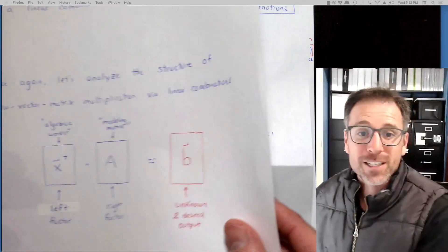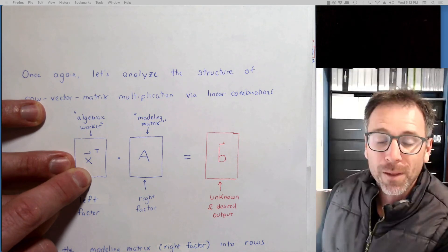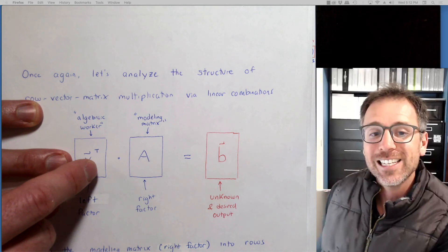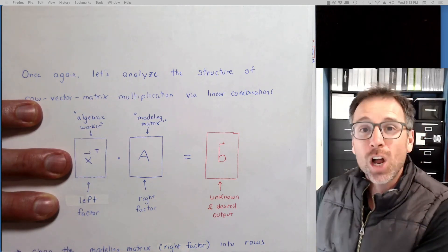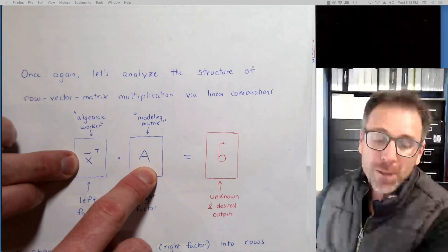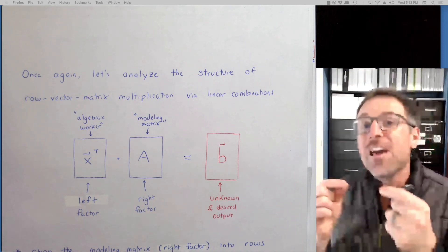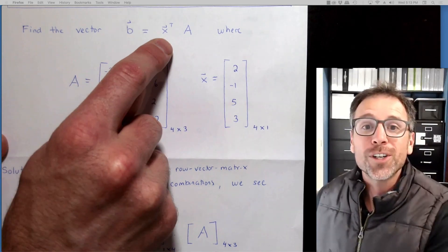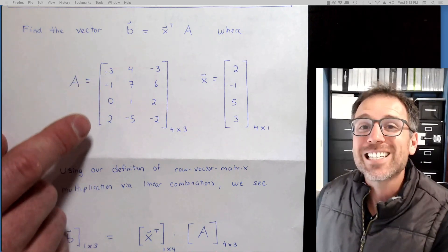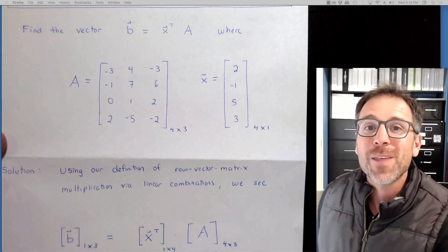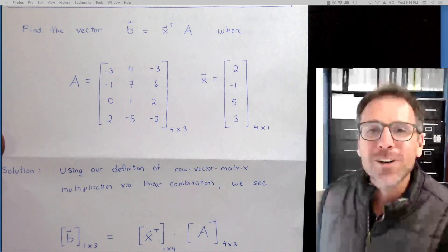To recap: when multiplying a row vector x-transpose by matrix A, the modeling matrix is on the right and we partition it into rows, taking linear combinations of those rows with scalars from the left vector. In matrix-column vector multiplication, the modeling matrix is on the left and we take linear combinations of the columns. There's a clear duality — linear combinations via columns versus via rows. Community challenge: can you find an alternate definition of x-transpose times A using dot products, and confirm it gives the same result? That's exactly what we'll explore in the next videos.